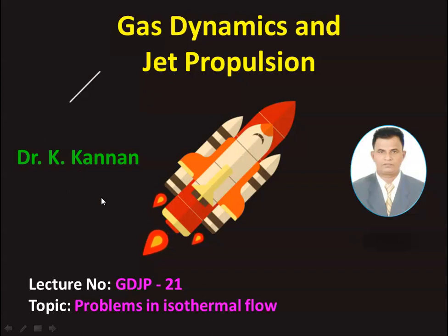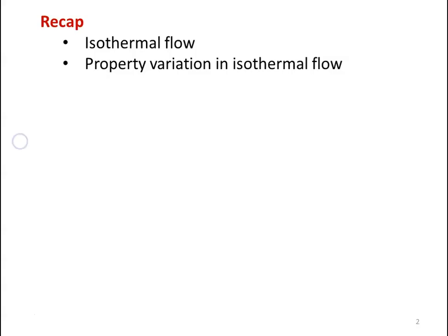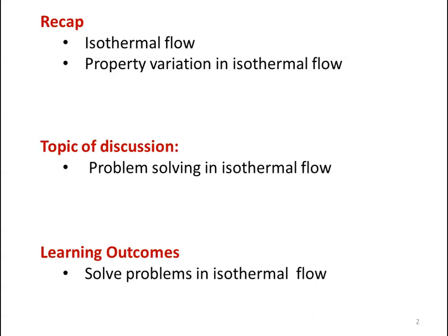This is lecture number 21 in Gas Dynamics and Jet Propulsion. We are going to solve problems in the isothermal flow. In the earlier lecture, we discussed the theory part of the isothermal flow. We defined the isothermal flow and calculated the property variation in isothermal flow. Here we solve a few problems in the isothermal flow using the gas tables. The learning outcome: at the end of the lecture, the student will be able to solve problems in the isothermal flow.